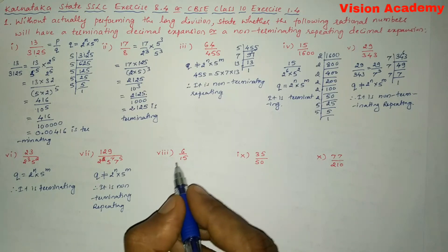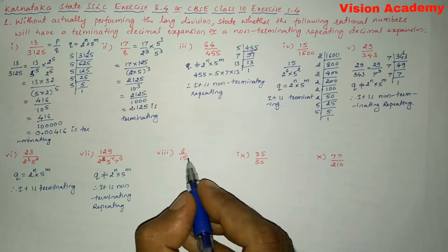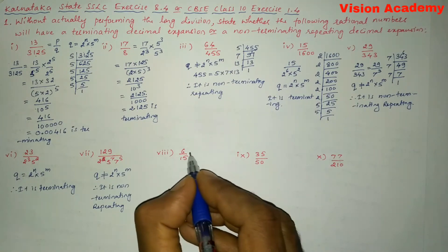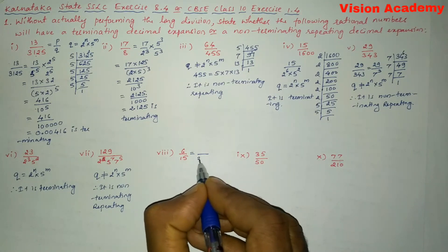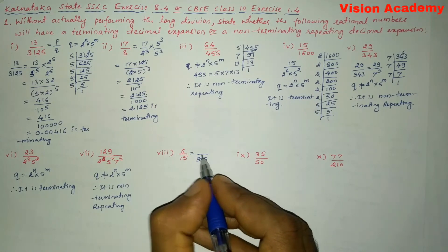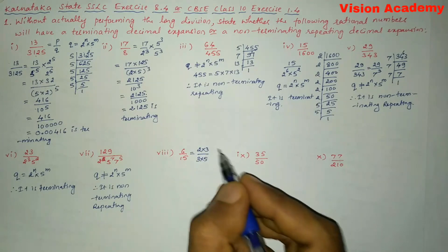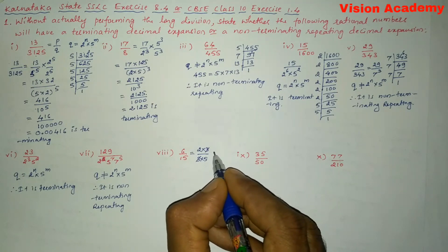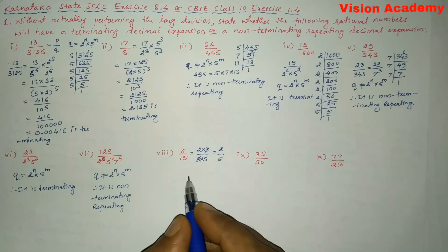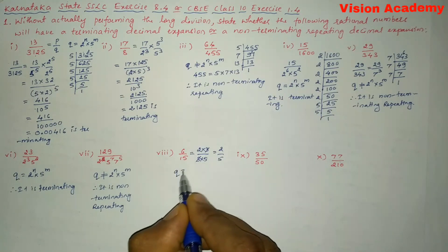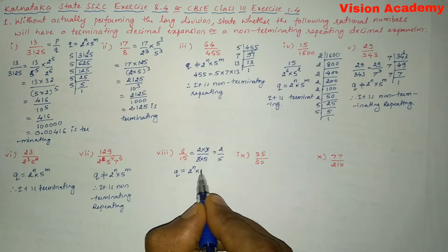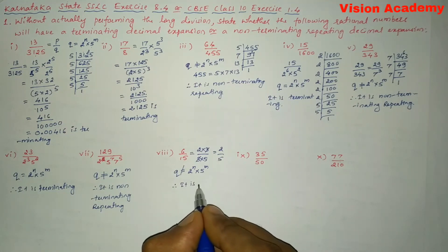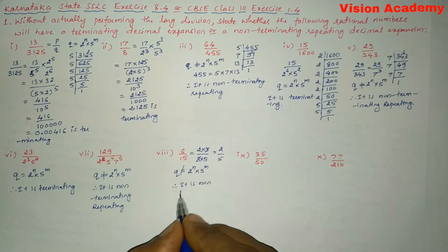Roman number eight: 6 divided by 15. We can write 15 as 3 into 5, and 6 as 2 into 3. The factor 3 cancels, leaving 2 divided by 5. Since the denominator Q is not in the form 2 to the power n into 5 to the power m — wait, actually 5 alone is 5 to the power 1, but 2 is missing in the numerator context — it is non-terminating.